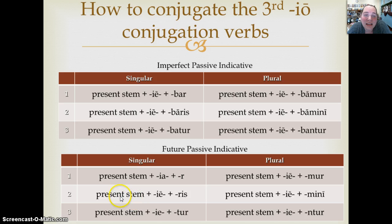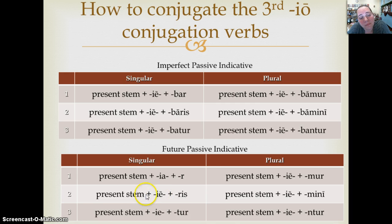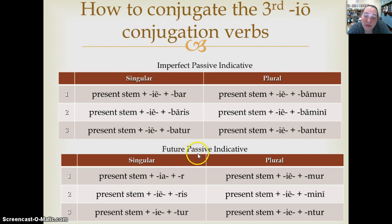You're not going to confuse the second person singular present passive with the second person singular future passive for a third IO verb, because the future passive for a third IO is going to be IE — so you don't just have a macron as the difference between the two. The imperfect passive indicative uses the present stem plus IE plus the imperfect endings — bar, batur, bamur, bamini, bantur. For the future passive: present stem plus IA for the first person singular, IE for the others, plus your passive endings.